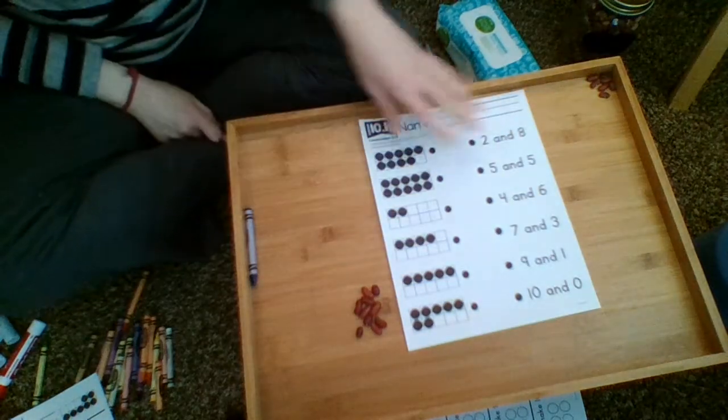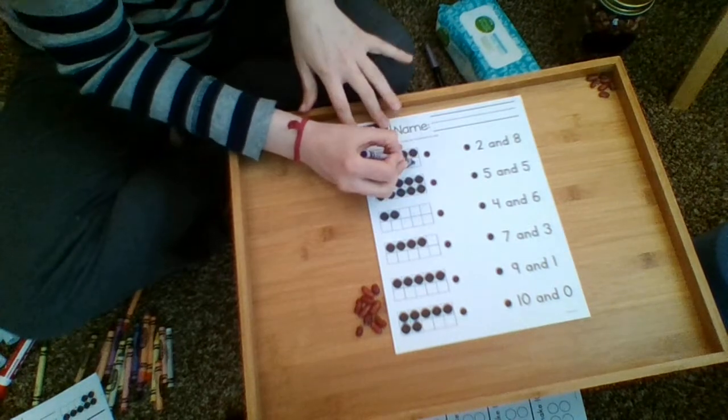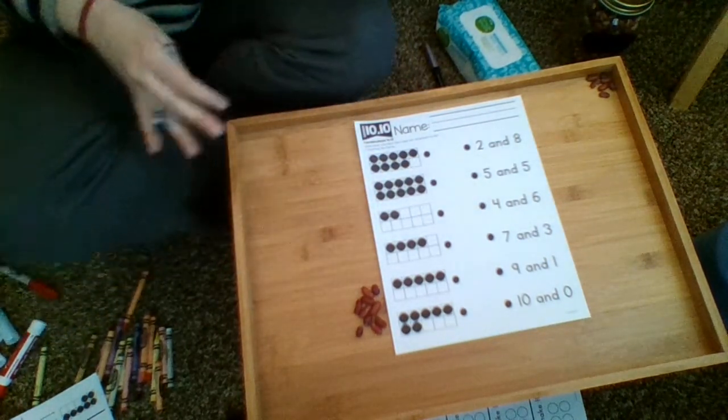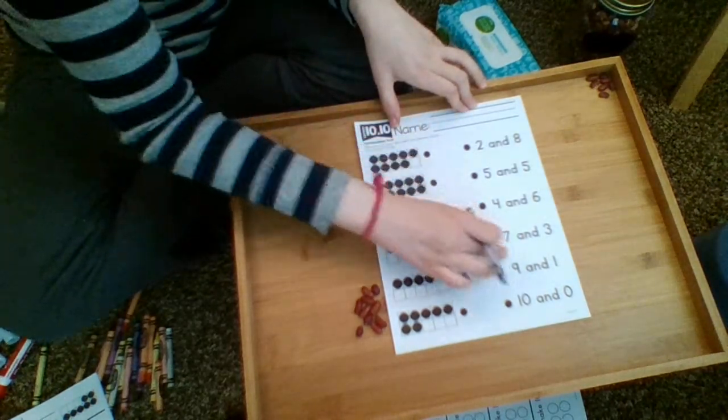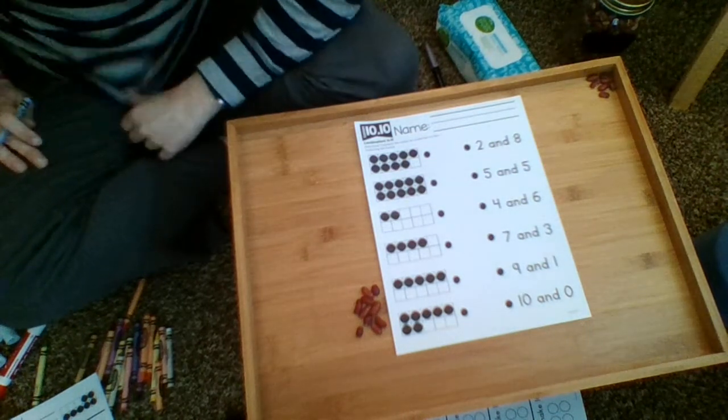For this one, you can use your fingers, manipulatives, or the paper itself - or don't use the paper at all and just talk about it. I'm going to use the paper because this is a concept we've done in class, but it's a little bit trickier for kindergartners.